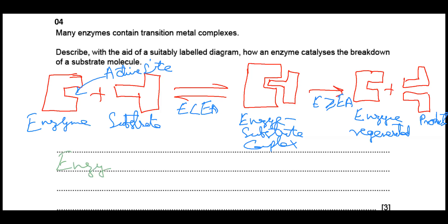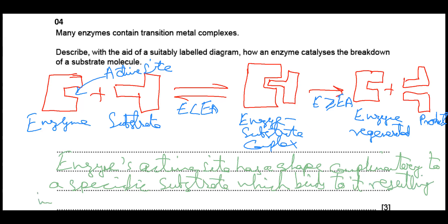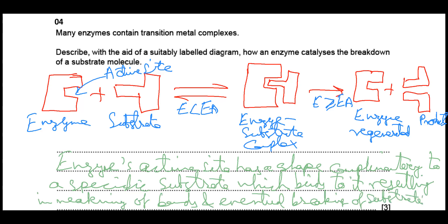The enzyme's active site has a shape complementary to a specific substrate, which binds to it resulting in the weakening of bonds and eventual breaking of the substrate into products.